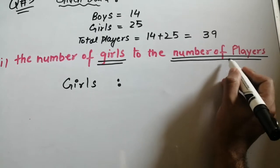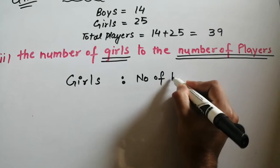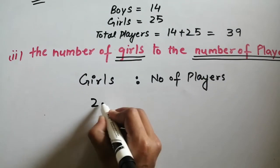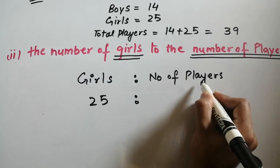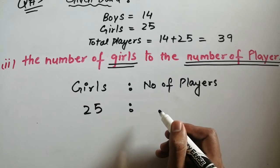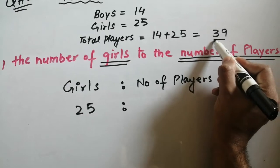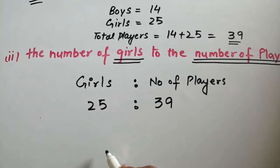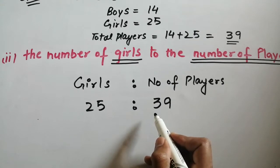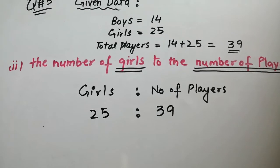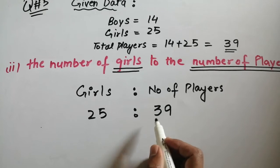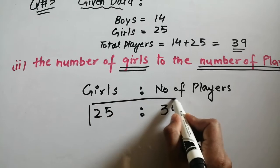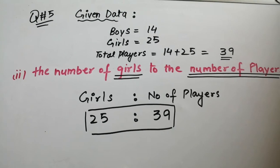The number of girls is 25, and the total number of players is 39. So girls to total players: 25 ratio 39. But 25 and 39 will not divide by any common number, so the final answer is 25 ratio 39. Both parts are done, which were very easy and straightforward.